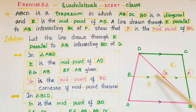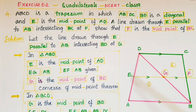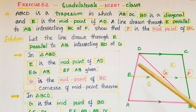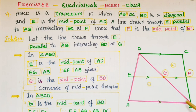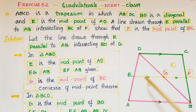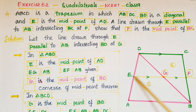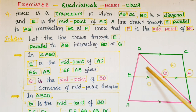The diagonal BD divides the trapezium into two triangles. Take the first triangle ABD. Here E is the midpoint of side AD, and EG is parallel to AB because EF is parallel to AB. As per the converse of the midpoint theorem, a line drawn through the midpoint of one side of a triangle, parallel to another side, bisects the third side.